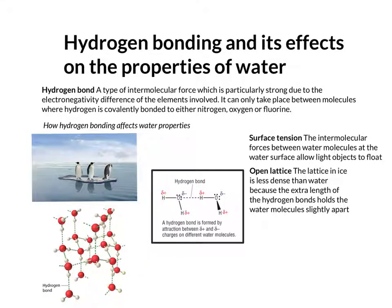The lattice in ice is called an open lattice because the H2O molecules are held slightly apart from each other when they arrange themselves in a solid formation. And what this means is that ice can float on water.